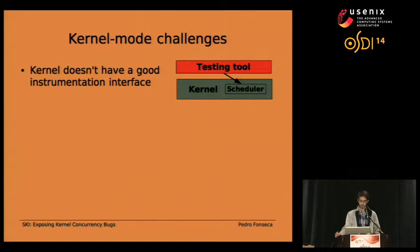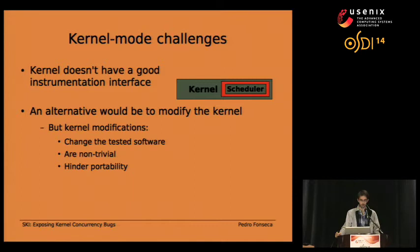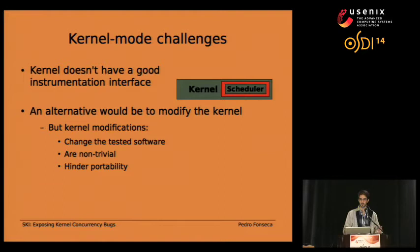An alternative would be to modify the kernel itself and insert our tool around the scheduler to have this type of control. But kernel modifications have disadvantages: it's generally not a good idea to change the tested software because you could be creating new bugs or hiding existing ones. Also, the kernel has a particularly rich set of synchronization primitives, making this change difficult. Additionally, such a tool would have very limited portability — if we'd like to test different kernels, we'd have to port the testing tool for each one.